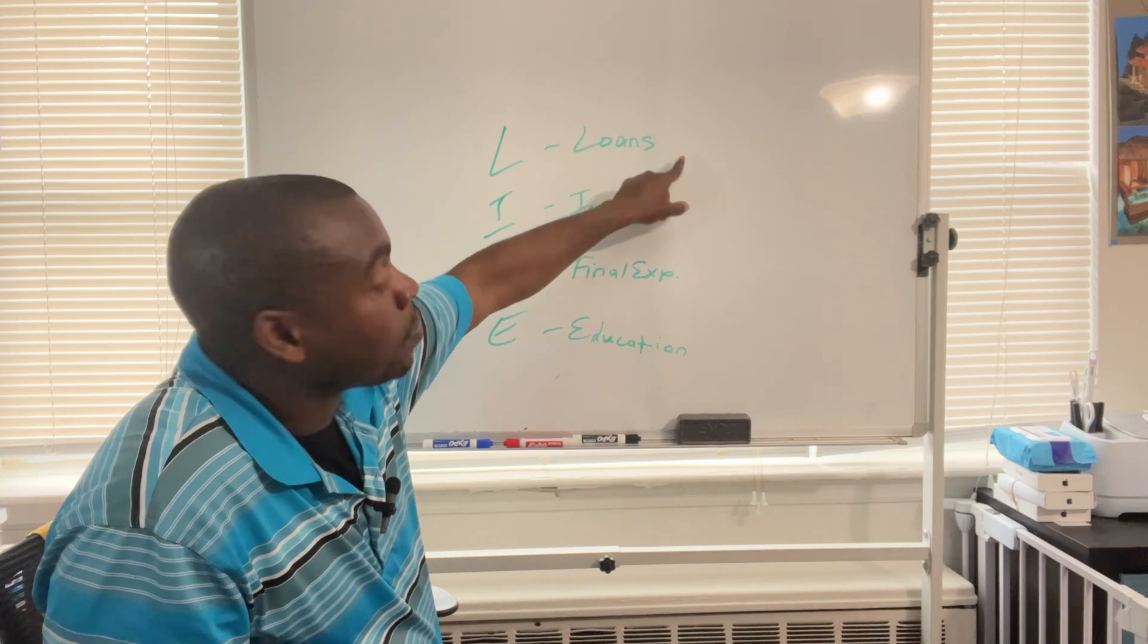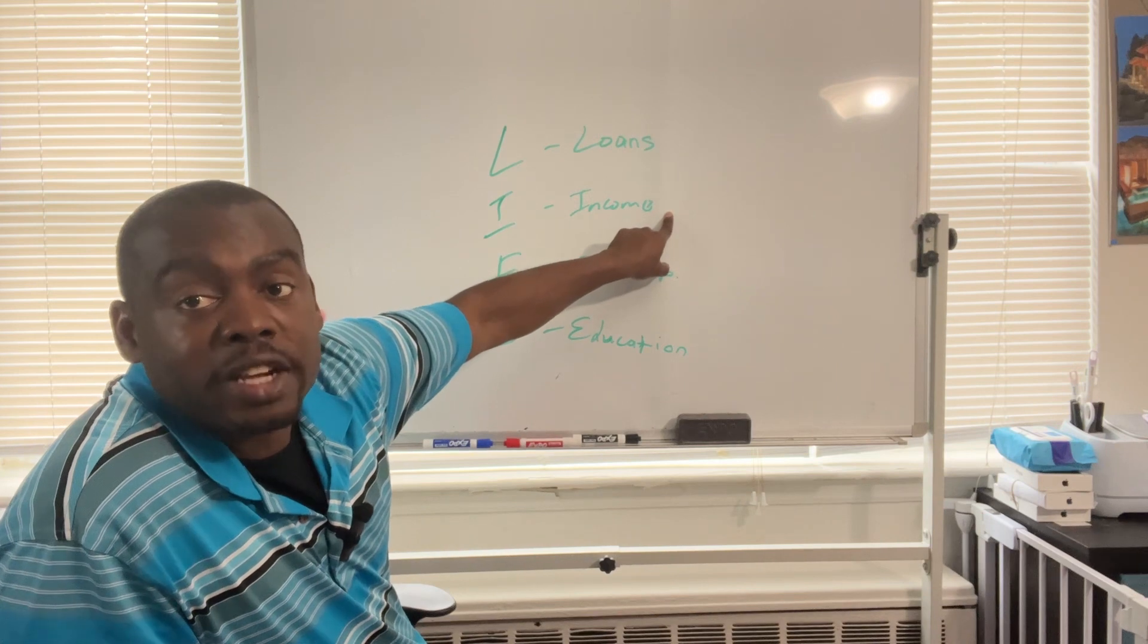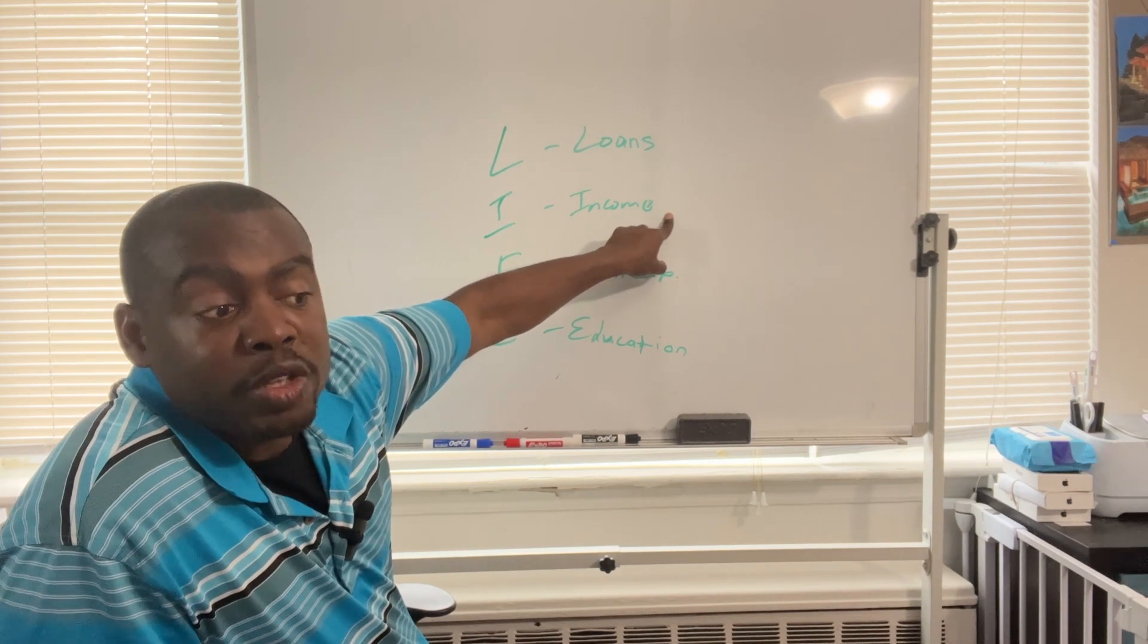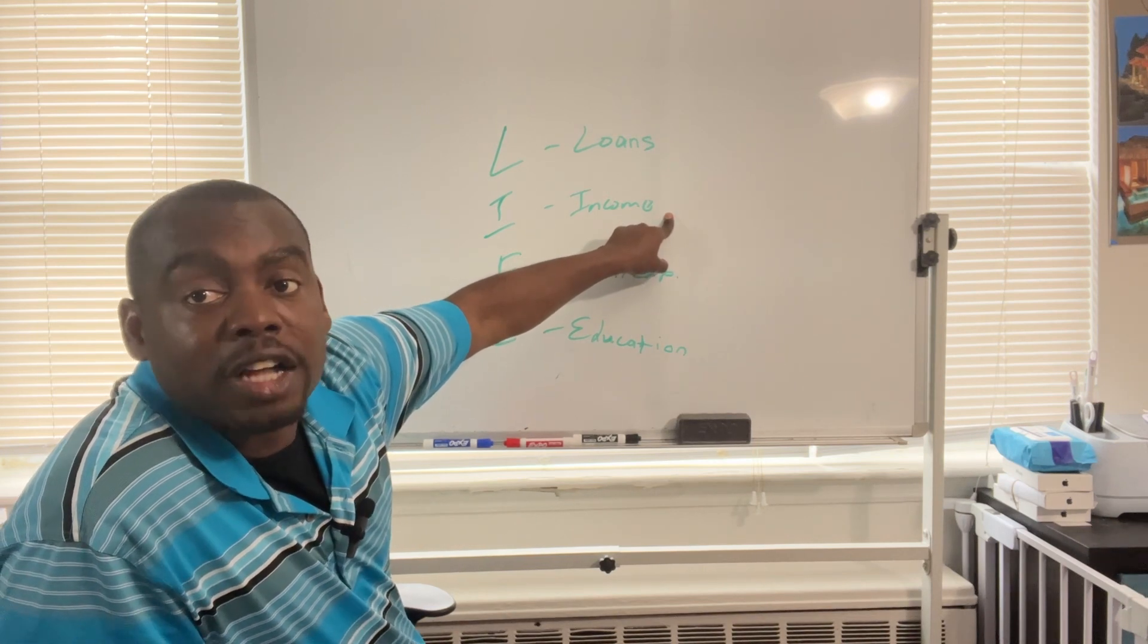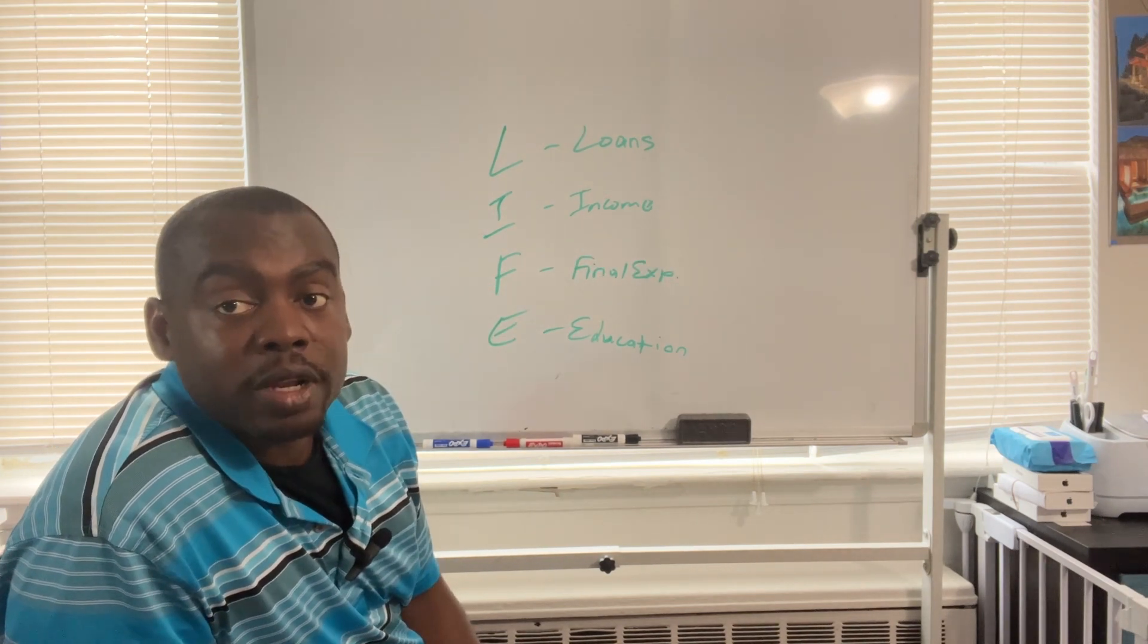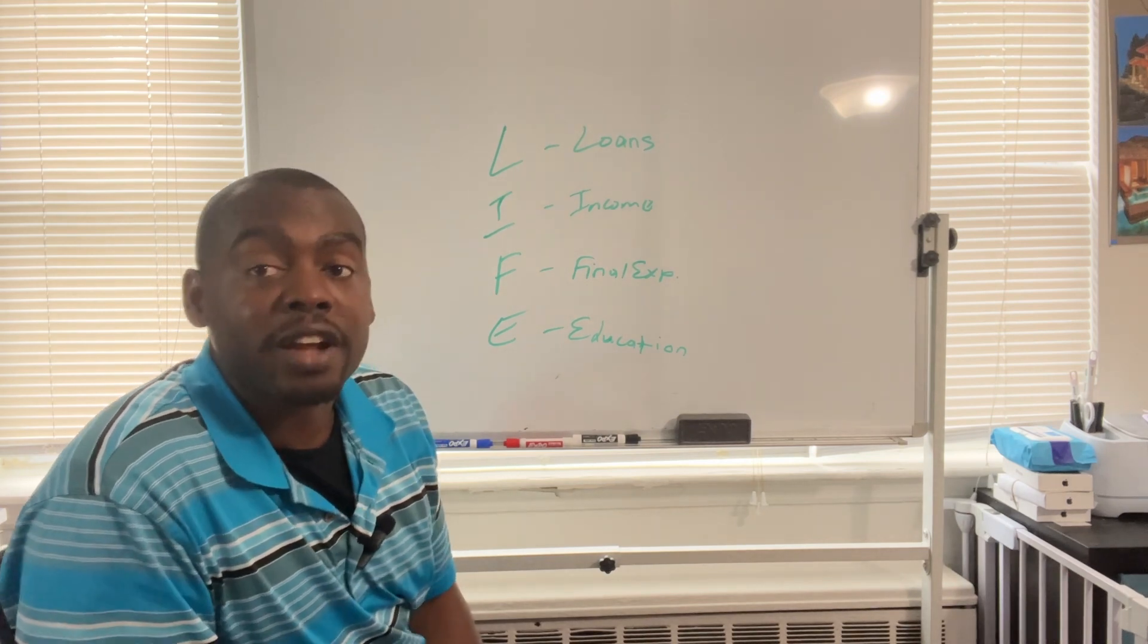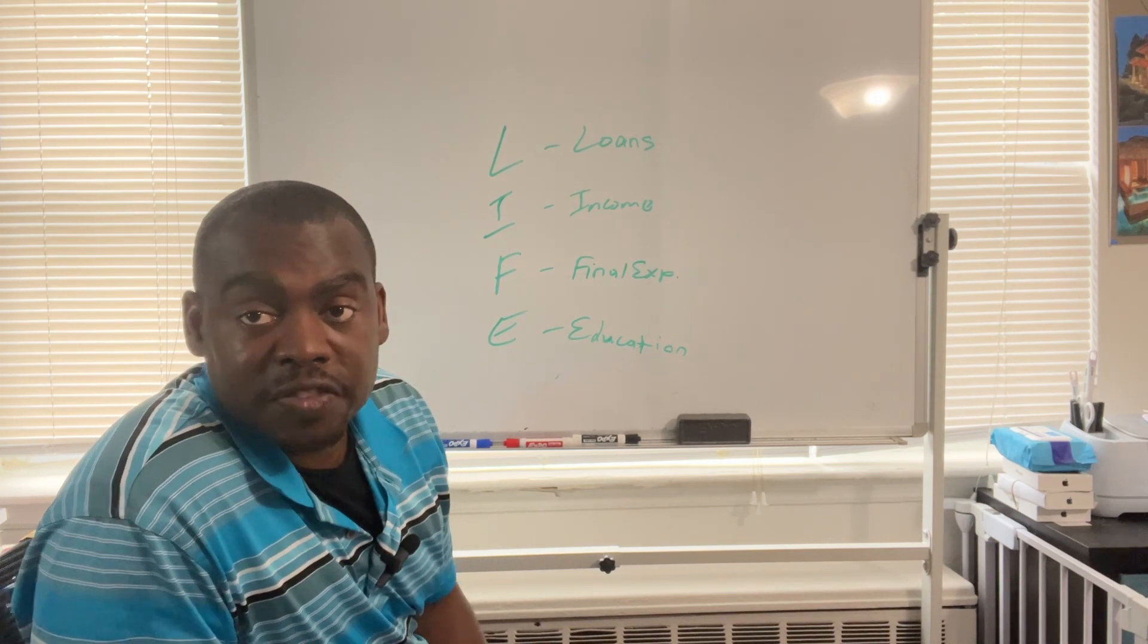And then income - you want to be able to replace your income, because when you die your income dies with you. You're no longer available to earn that money, so your income dies with you. You want to be able to put that number in there.